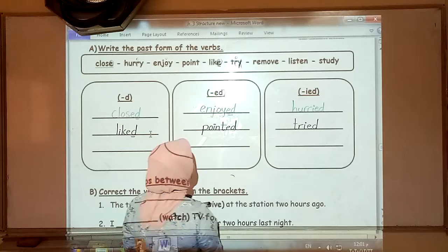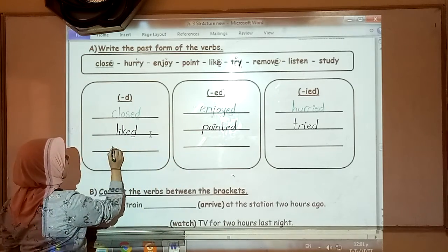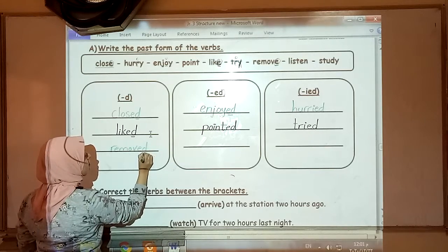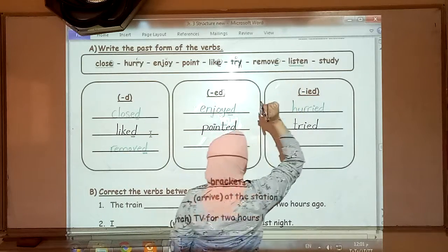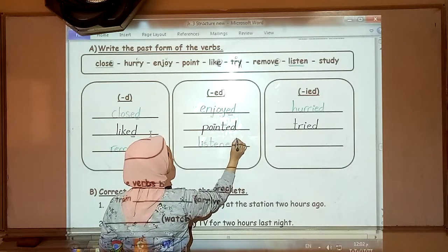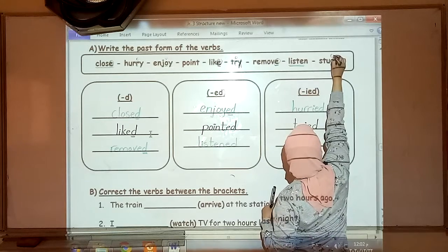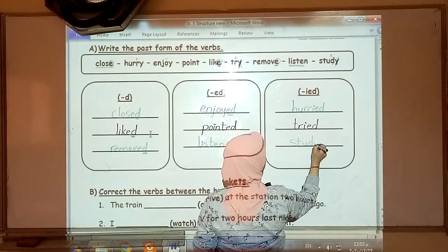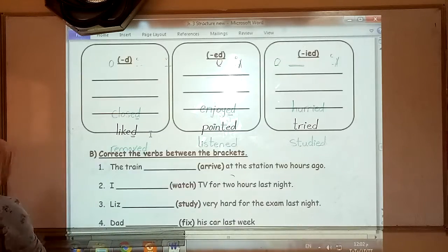Tried. Try, Y, consonant, cross it. Tried. Remove. It ends in E. So we must add D only. Removed. Listened. It's one of the exceptional verbs. Remember, we add to it ED directly. Listened. Study. It ends in Y and before it a consonant letter, so we must cross the Y. Study with the IED. Okay?